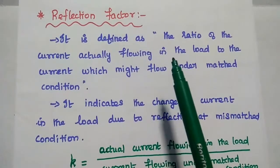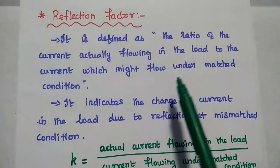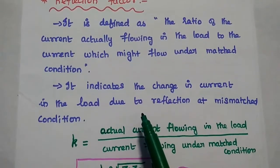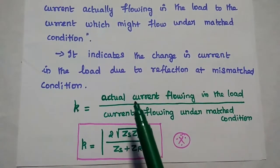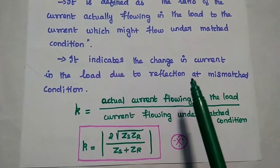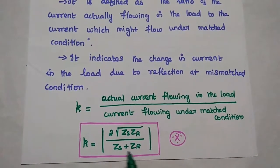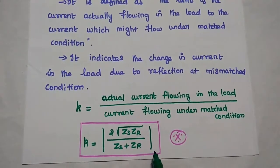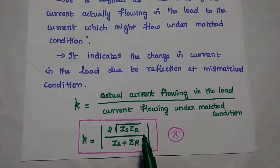The next one is reflection factor. It is defined as the ratio of the current actually flowing in the load to the current flowing under matched condition. It is mainly used to indicate the change in the load due to the reflection at the mismatched condition. It is represented as small k, and its formula is k equal to modulus of 2 into square root of ZS times ZR divided by ZS plus ZR. Here ZS is the sending end impedance or input impedance, and ZR is the receiving end impedance or the load impedance.